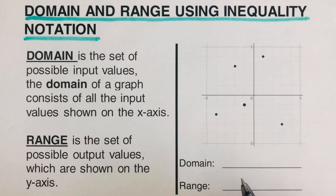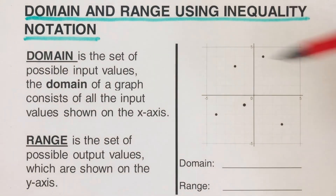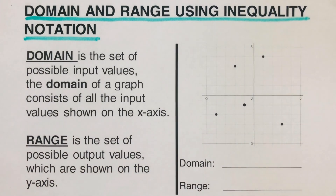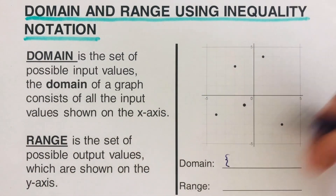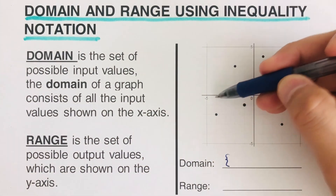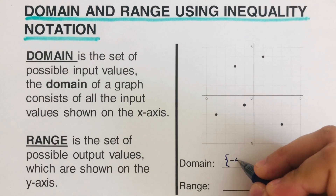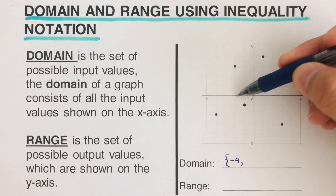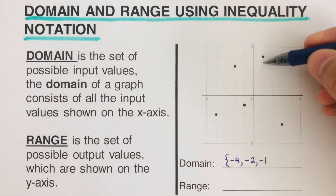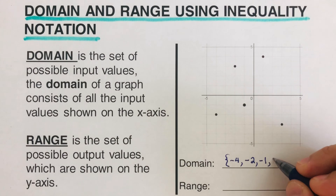So if we look for the domain of this graph, again, domain — we're looking for the values on the x-axis or the inputs. So in this problem, the domain is the set of values. We look for the dots, starting from the left going to the right. So this would be negative four, then negative two, then negative one, then positive one, then positive three.